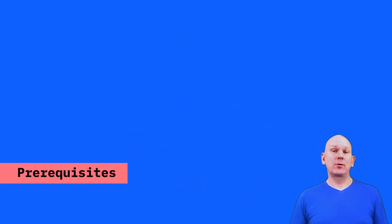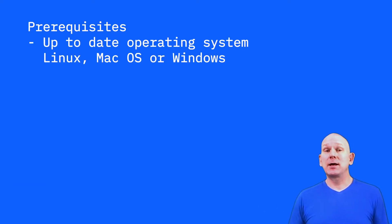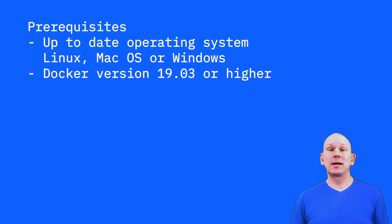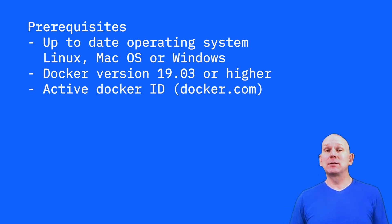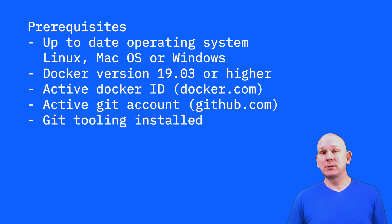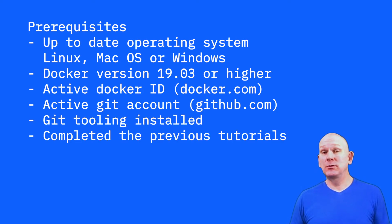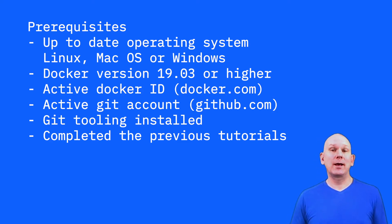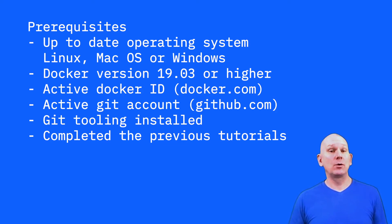Before we start, let's go through the prerequisites which follow on from the previous tutorials. You need to have an up-to-date version of Windows, Mac OS, or Linux, Docker version 19.03 or later, an active Docker ID and a GitHub account, and the Git tooling installed. You should also have completed the previous tutorials on integrating source control with Node-RED and packaging a Node-RED application in a container, as this tutorial expects you to have the template project forked to your GitHub account and cloned as a Node-RED project.